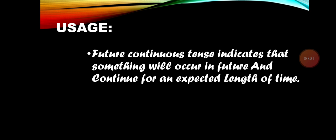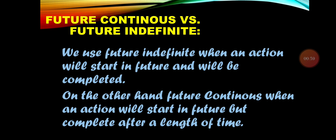First of all, we are starting with the usage of Future Continuous. Future Continuous indicates that something will occur in the future and continue for an expected length of time. It means we are talking about an action that will start in the future but will not be completed — it will be continued for some length of time.